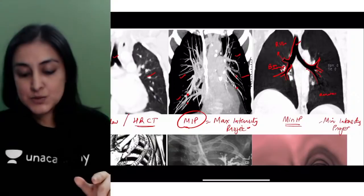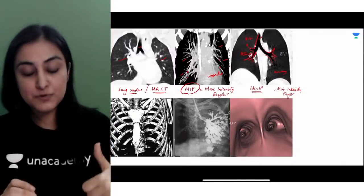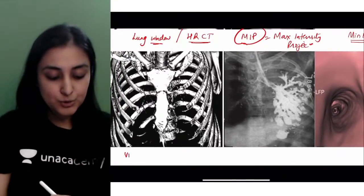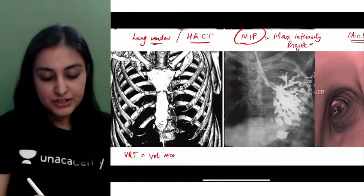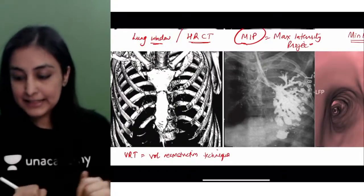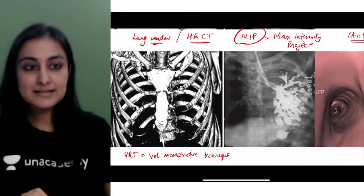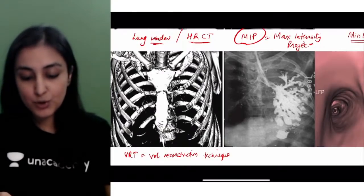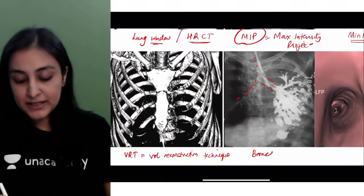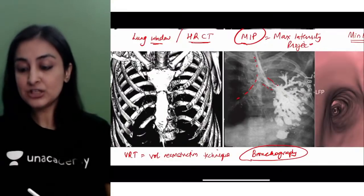MinIP was for the airway, MIP was for the vessels. These are two advances to remember, particularly for INICT aspirants. You've seen this 3D sort of reconstruction - this is referred to as VRT, volumetric reconstruction or volume rendered technique. Then going back into history - what is this older technique? We have injected contrast into the bronchus to visualize the bronchial tree. This was done when we didn't have MIP or HRCT to visualize the bronchi. This is called conventional bronchography.